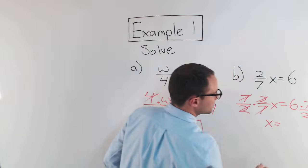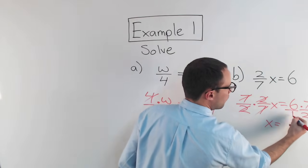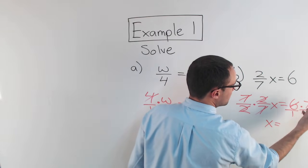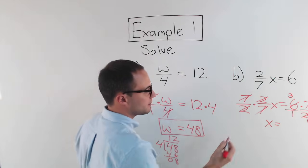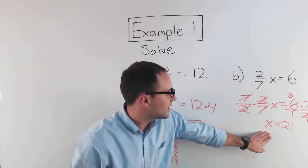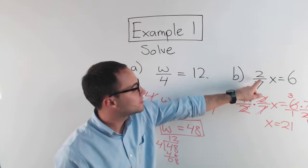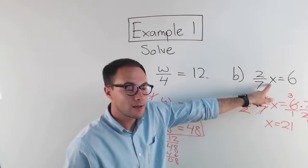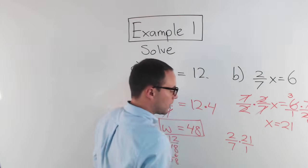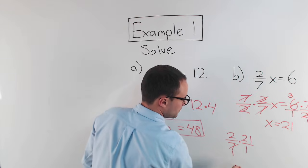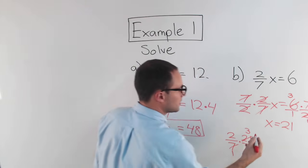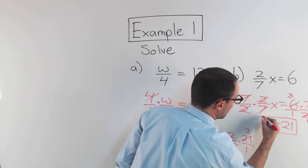So I get x equals — same thing on the right side. I'll simplify: 6 over 1, the 6 simplifies to a 3, and 3 times 7 is 21. Before I box that answer, I can substitute it back in: 2/7 times 21. Put that over 1 — that simplifies, the 21 becomes 3, and 2 times 3 is 6. So 21 is my solution.